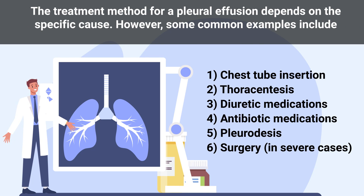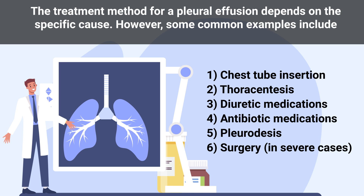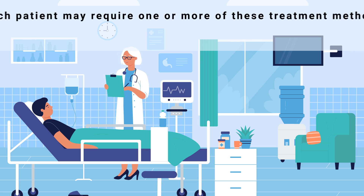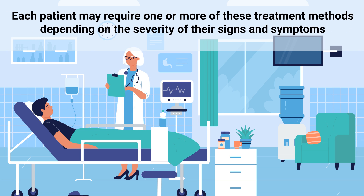The treatment method for a pleural effusion depends on the specific cause. Common examples include chest tube insertion, thoracentesis, diuretic medications, antibiotic medications, pleurodesis, and surgery in severe cases. Each patient may require one or more of these treatment methods depending on the severity of their signs and symptoms.